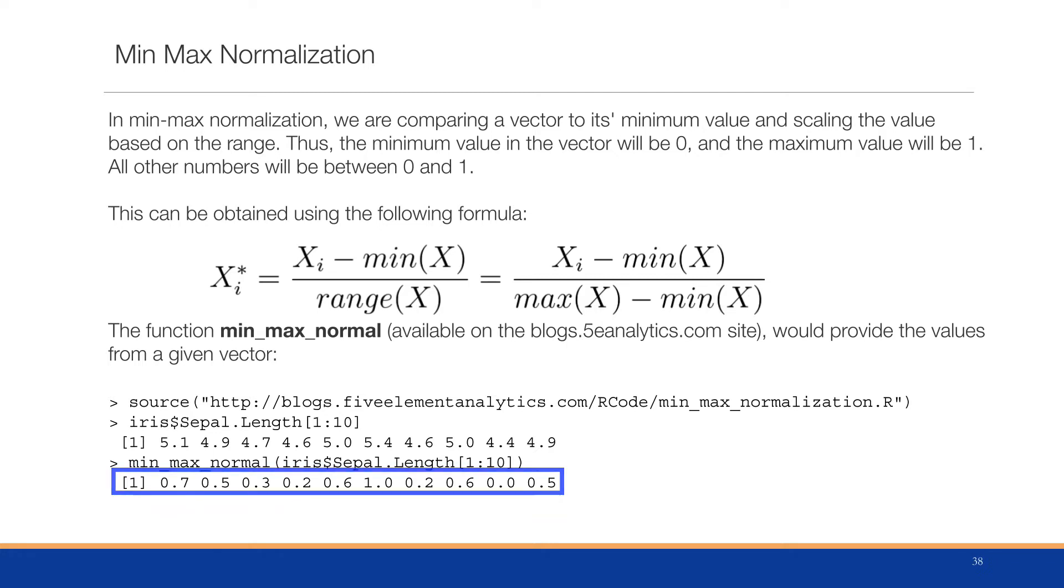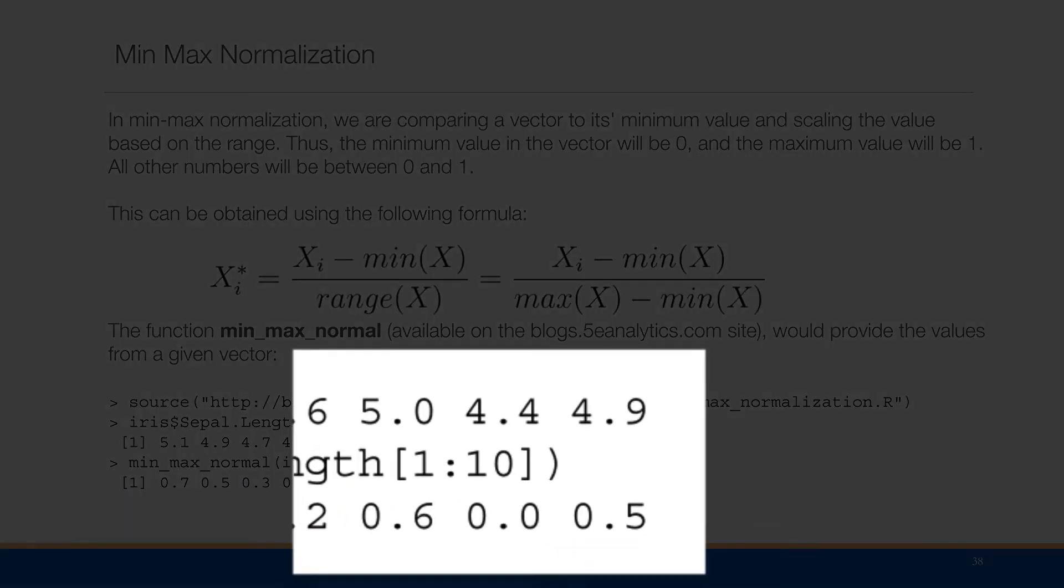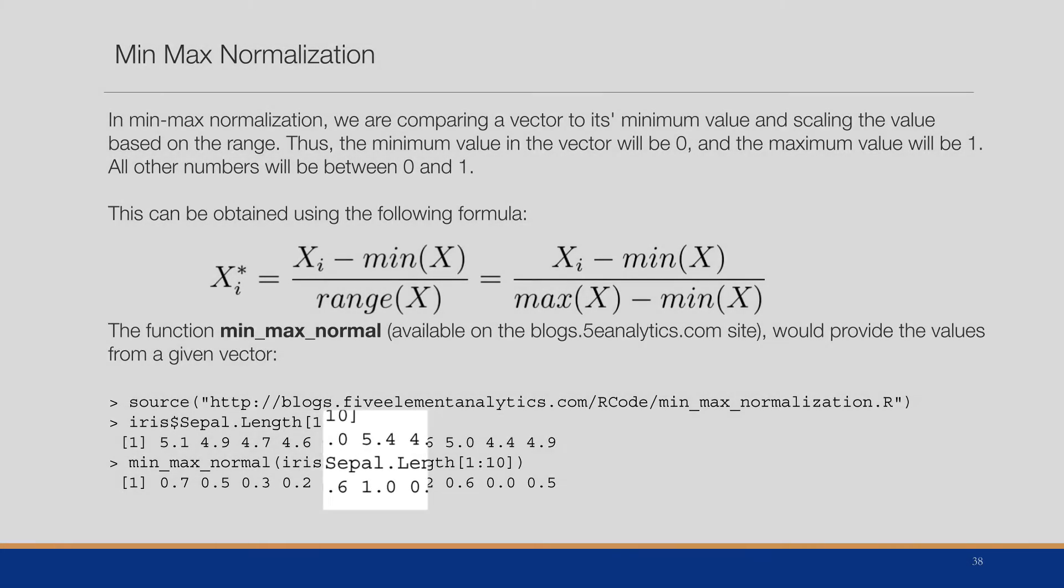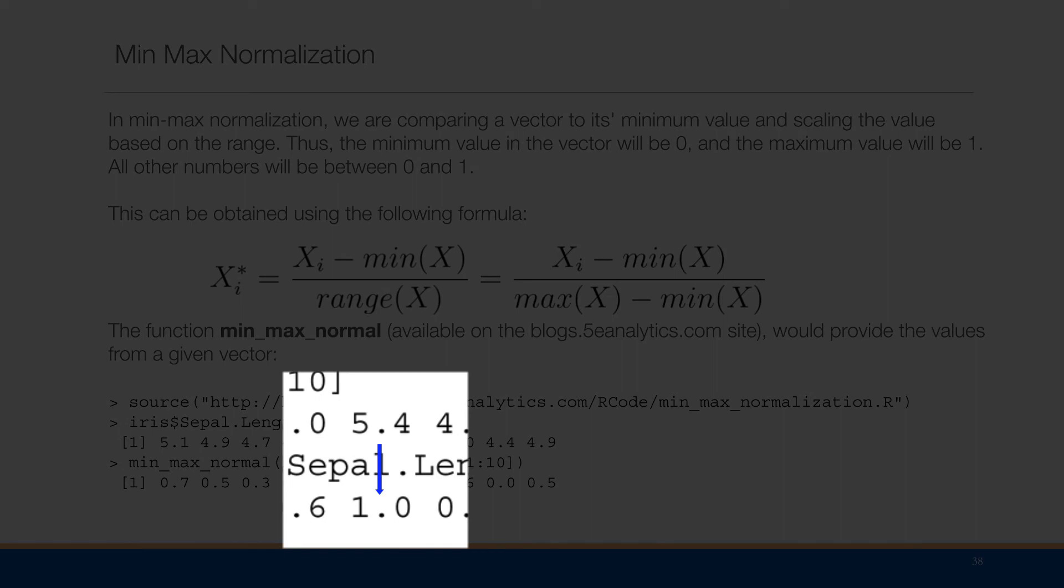So here you can see that all the way to the right, the 4.4 is equivalent, once it's normalized, to zero, because that's the minimum. And in the middle, where the 5.4 is, that's the maximum, and it has been converted into a one. And all other numbers fall between the zero and one.